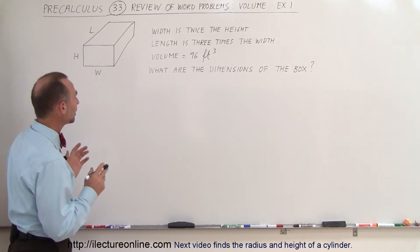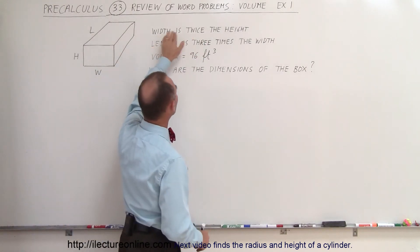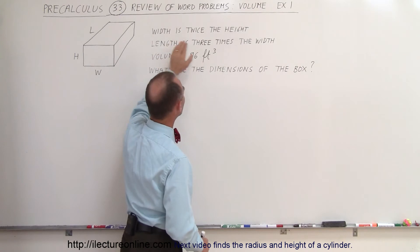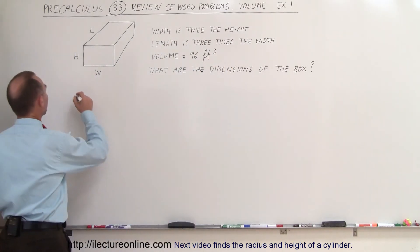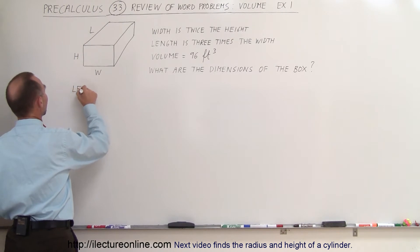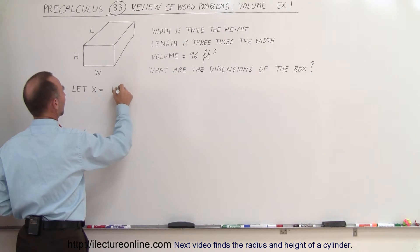Alright, we want to find what we think is the smallest dimension. So the width is twice the height, that means the width is bigger than the height. And the length is bigger than the width, that means the height is the smallest dimension. And so therefore we're going to let x equal the height, because the height is the smallest dimension.